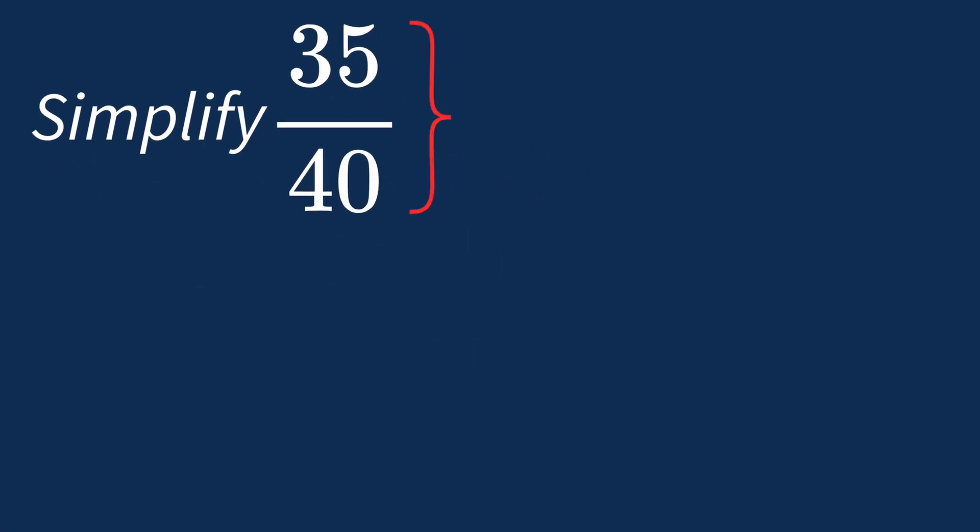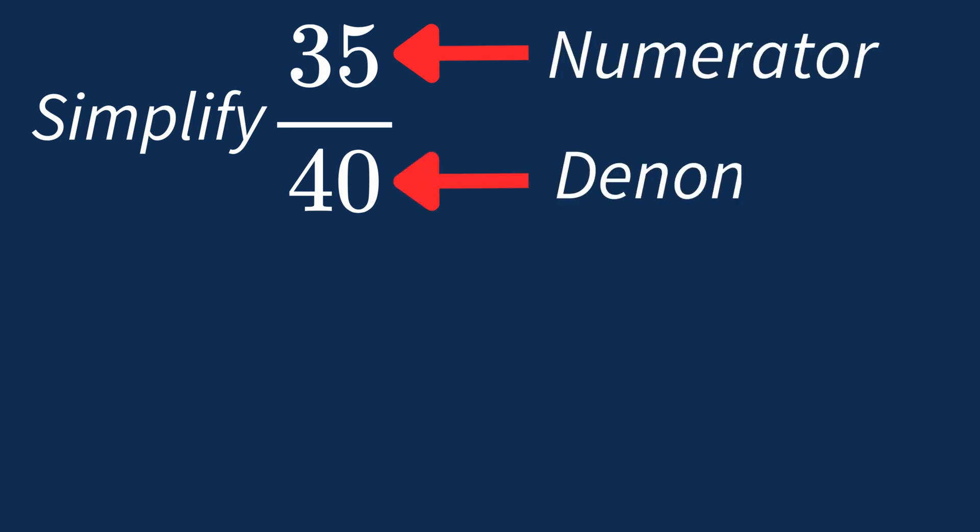To simplify 35 over 40, we need to look for the common factors between the top number, the numerator, and the bottom number, the denominator.